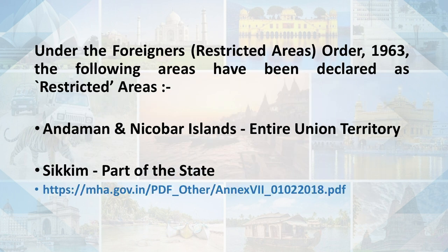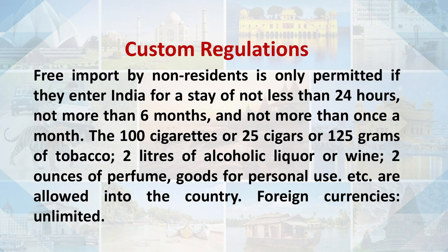Under the Foreigners Restricted Areas Order 1963, the following areas have been declared as restricted areas: Andaman and Nicobar Islands — the entire Union Territory has been included in the restricted area — and parts of Sikkim, which come under the restricted area. This covers the special permits required for restricted and protected areas.